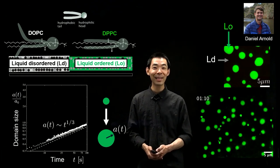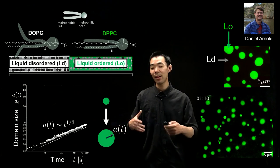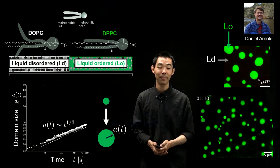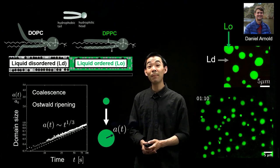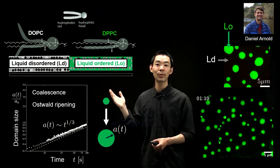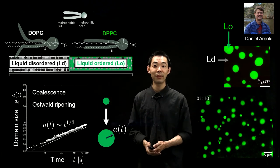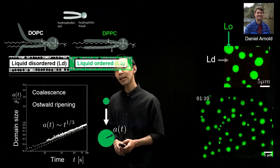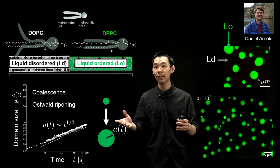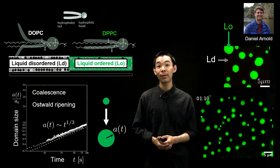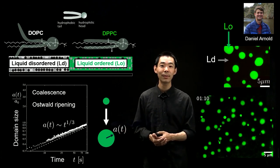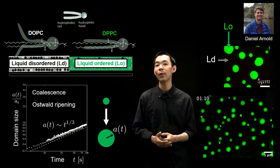All the experimental data fall along a single universal line of time to the one-third power. This is a well-known scaling in the kinetics of phase separation — domains grow circular and they grow slowly like t^(1/3). There are different mechanisms that can explain this scaling, including coalescence and Ostwald ripening, which I'll get to later. Sarah Keller's lab has found this for lipid bilayers; it is a generally known result for kinetics of phase separation.